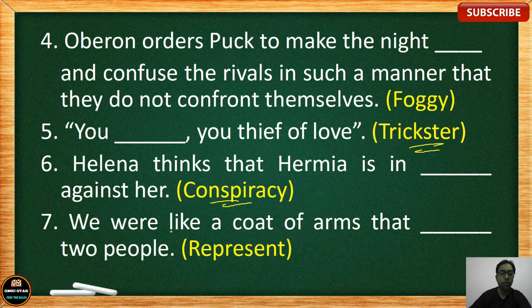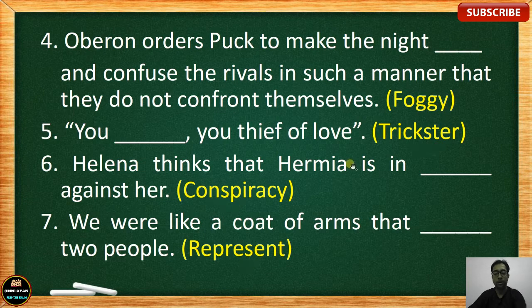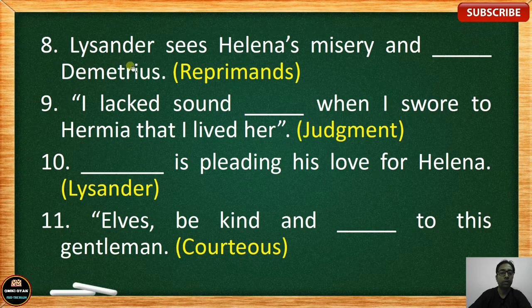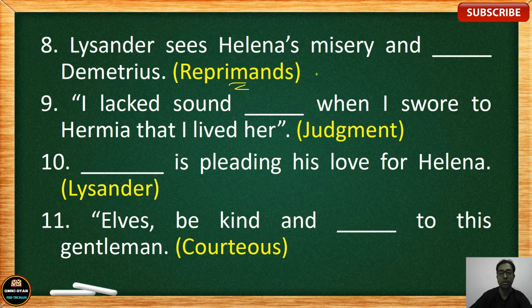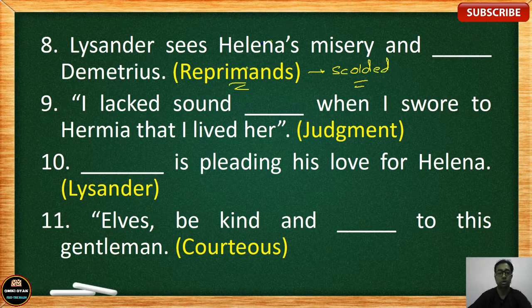Number 7: 'We were like a coat of arms that blank two people.' The correct answer is 'represent.' Number 8: Lysander sees Helena's misery and blank Demetrius — the correct answer is 'reprimands.' Reprimands means scolding; reprimand, rebuke, and scold are similar synonyms, but the correct word from the text is 'reprimand.'